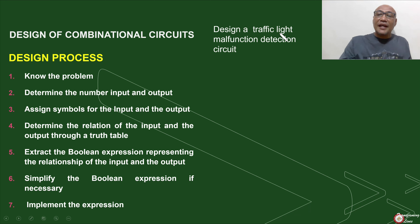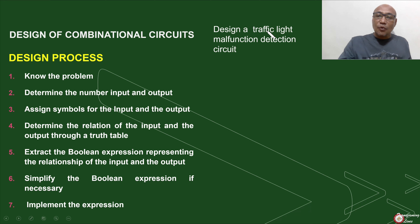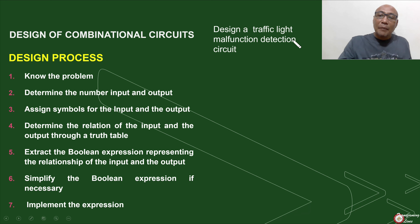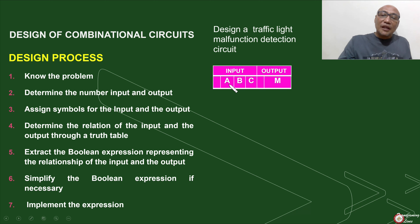Plan rule number one — that is, know the problem. Let's try to dissect our problem: design a traffic light malfunction detection circuit. What are we trying to do? We try to design a traffic light and detect the malfunction on the circuit of the traffic light. With that, we would know how many inputs we need. We know that the traffic light has red, green, and yellow — therefore, there are three inputs. We want to detect the malfunction, so there is only one output, and that is the malfunction of the traffic light. Our inputs are three, and let's assign symbols: A, B, and C. Our output is only one — that is the malfunction — and let's assign the symbol M.